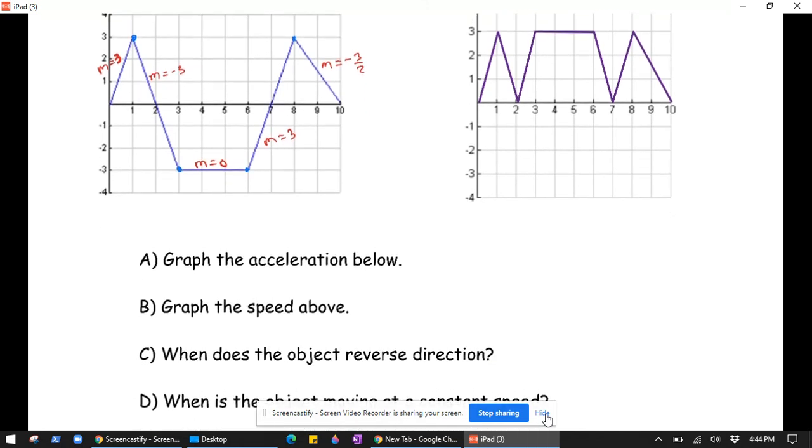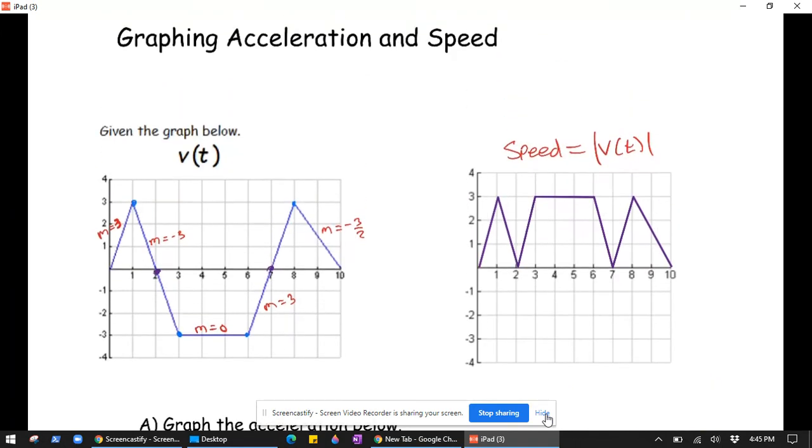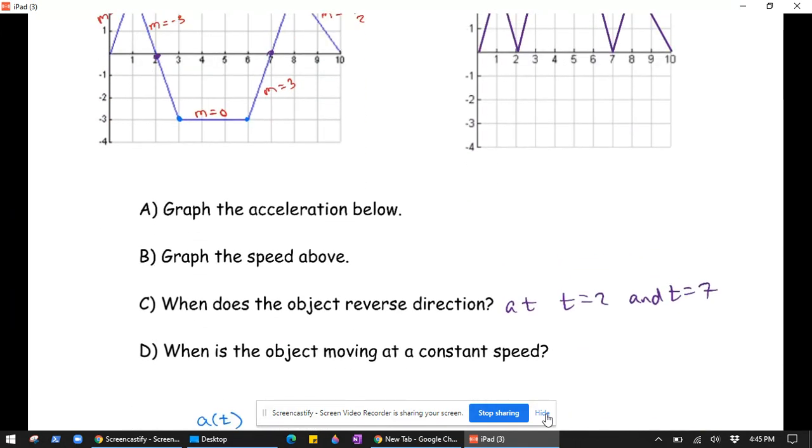When does the object reverse direction? Anytime the velocity changes sign. So that clearly happens at time 2 and at time 7. So at time 2 and time 7. There aren't any units on this graph. It's just kind of a generic exercise.